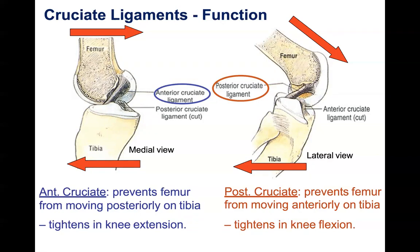Let's start with the ACL. Looking at the medial view of the leg, we have the tibia at the bottom, the femur at the top, and we did a cross section — a sagittal section — of the femur so we can actually see the ACL. You can see it starts posteriorly on the femur and attaches anteriorly to the tibia. These arrows represent forces that push the femur either posteriorly or the tibia anteriorly.